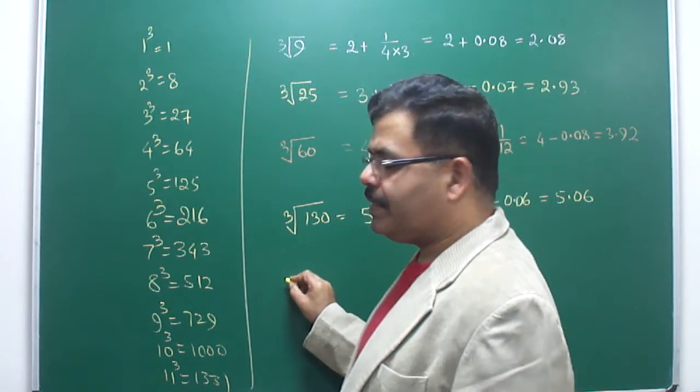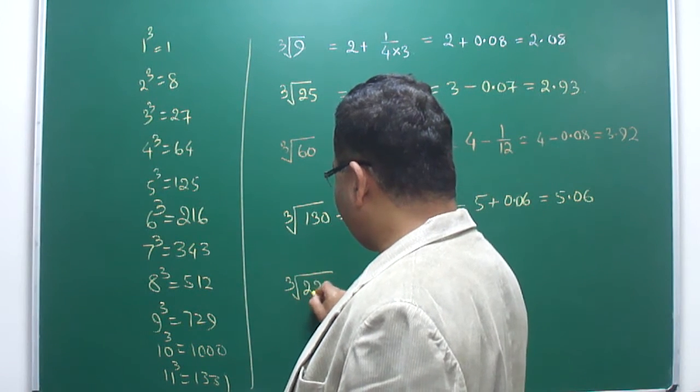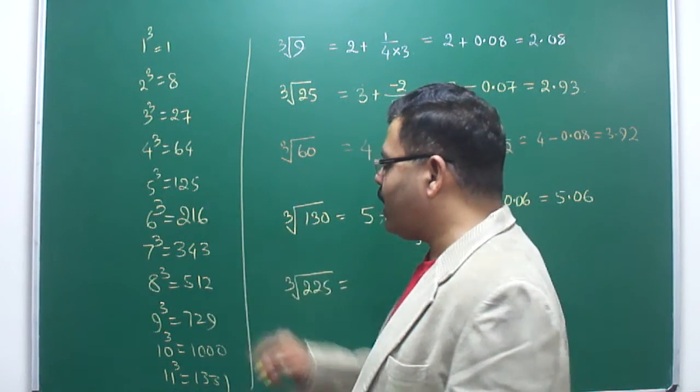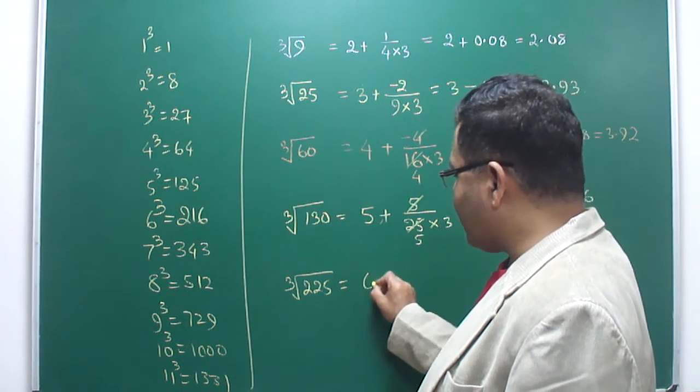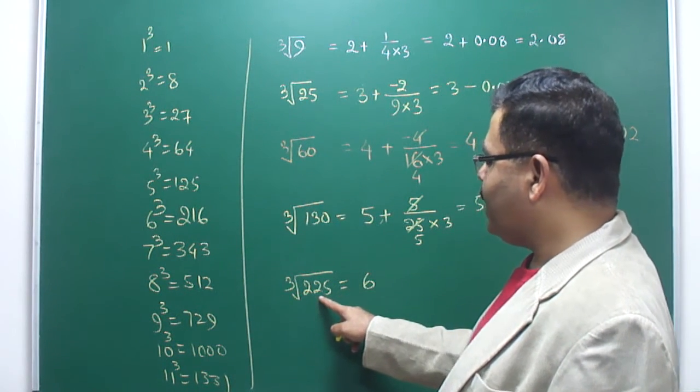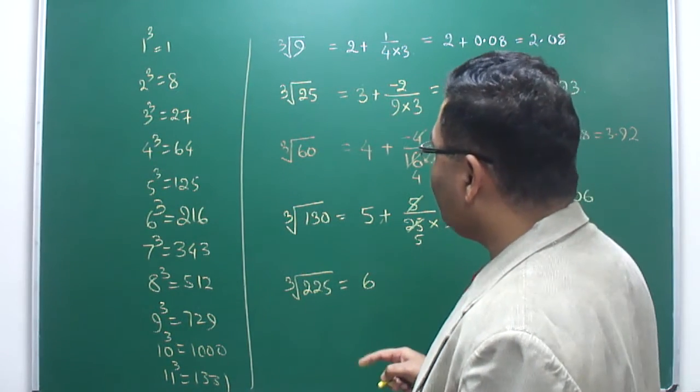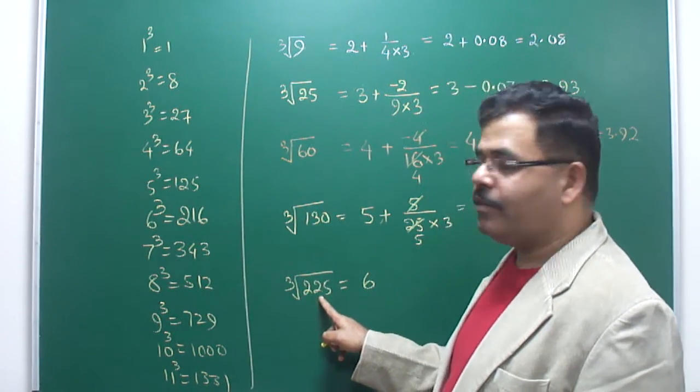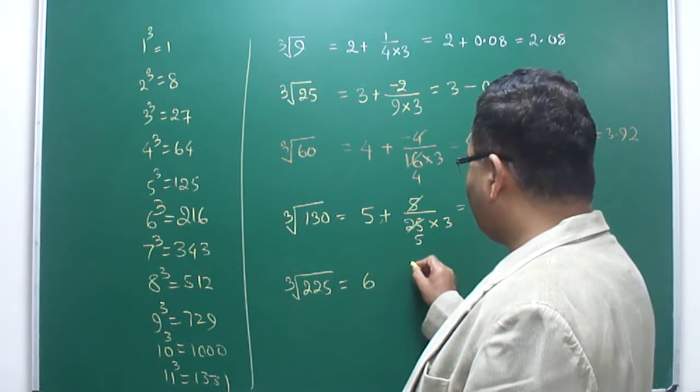If I take another number, say cube root of 225, what is the approximate number closer to this? 216. So of course 6 can be taken as reference. Is it less than or more than 216? More than. How much more? 225 minus 216, so 9 more than the actual number.